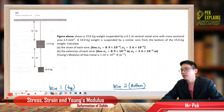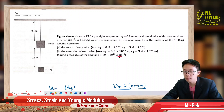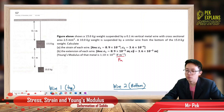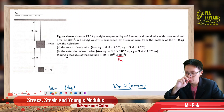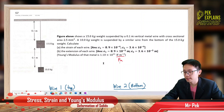Young's modulus has two units. It can be Newton per meter squared, or you can write Pascal — either one. That's actually the same unit as pressure, and the same unit as stress.